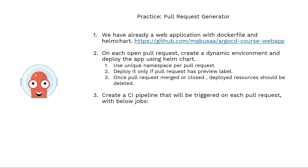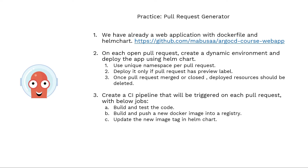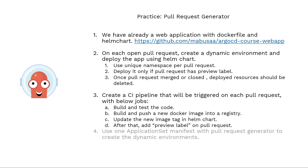We also have to create a CI pipeline that will be triggered on each pull request. It will do the following jobs: build and test the code, build and push a new Docker image into a registry, and update the new image tag in the Helm chart. After that, we label the pull request with our preview label. We have to achieve creating the dynamic environments using ApplicationSet and the pull request generator.